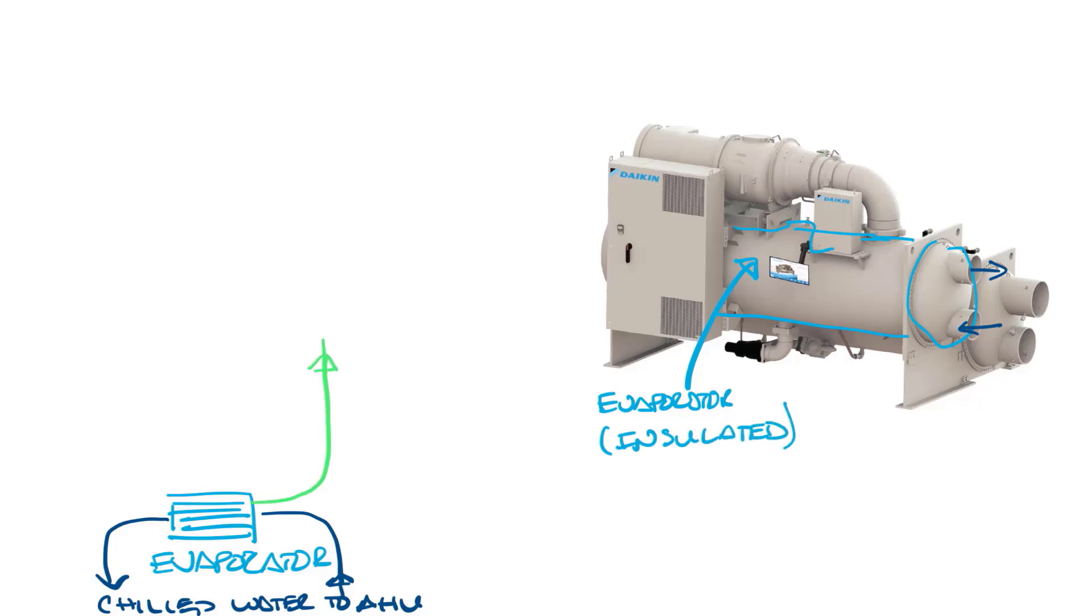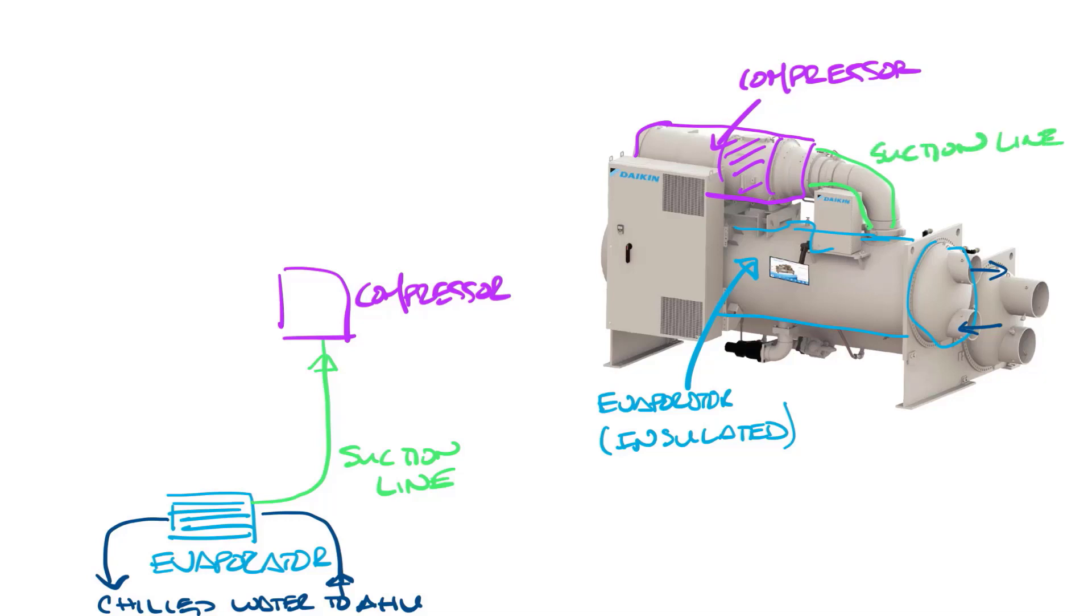Next, the suction line goes out of the evaporator into the compressor, and then on our chiller, the compressor is this section right here. It's actually just this kind of part right in here, because the rest of it on the left in the image would be the motor to drive it. And then on this side of it, this is the suction line.